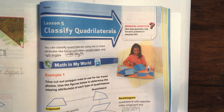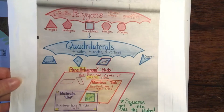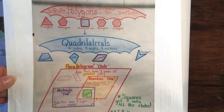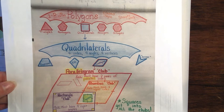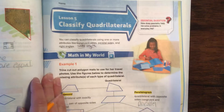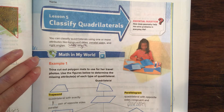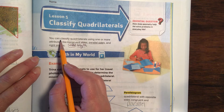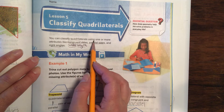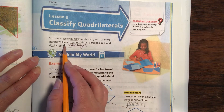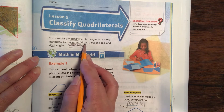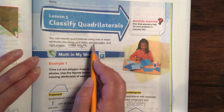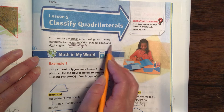Diving into this chapter. It'll be handy if you have this saved as a screenshot onto your iPad. Today on classifying quadrilaterals, you need to remember three things we're going to use on just about every single one of these questions. You can classify quadrilaterals using one or more attributes like congruent sides — congruent means same length. Another one is parallel sides and right angles.